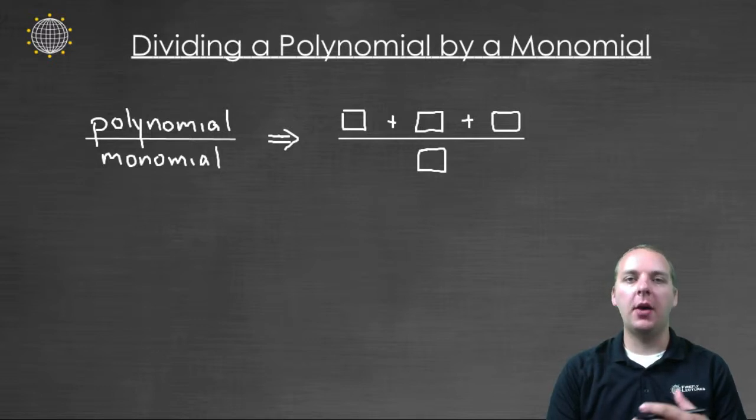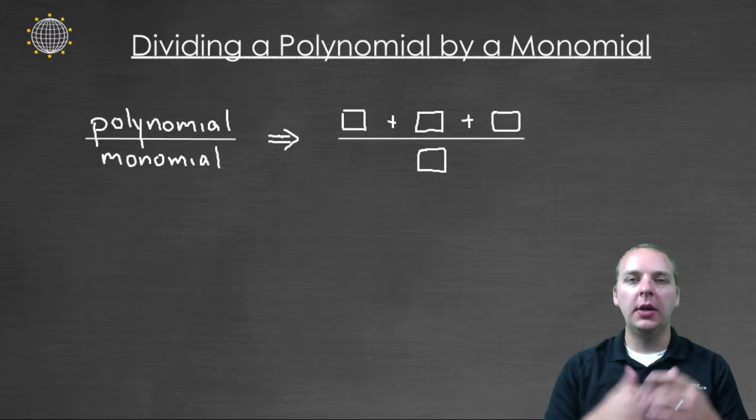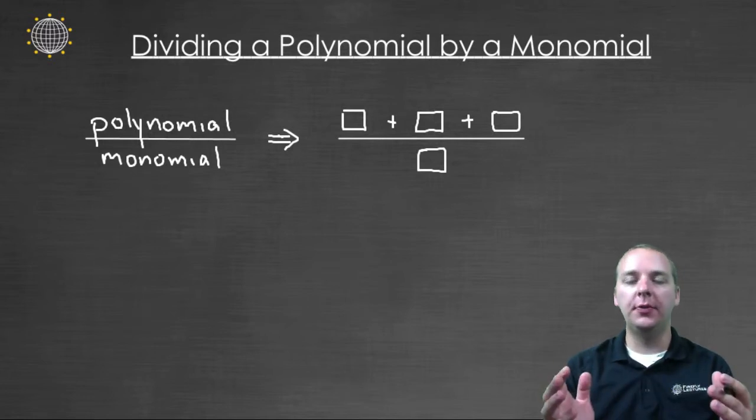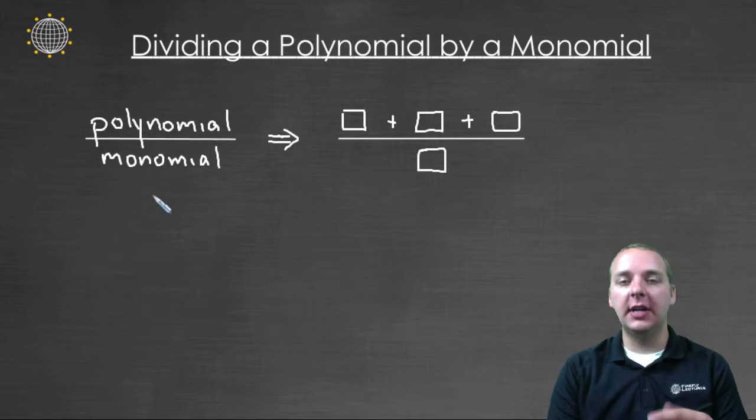In this video we're going to talk about how we take a polynomial and divide it by a monomial. A polynomial can have any number of terms that are added or subtracted together, but a monomial has to be just a single term. And if this is the case that we have, there's actually a little bit of a shortcut that we can use.